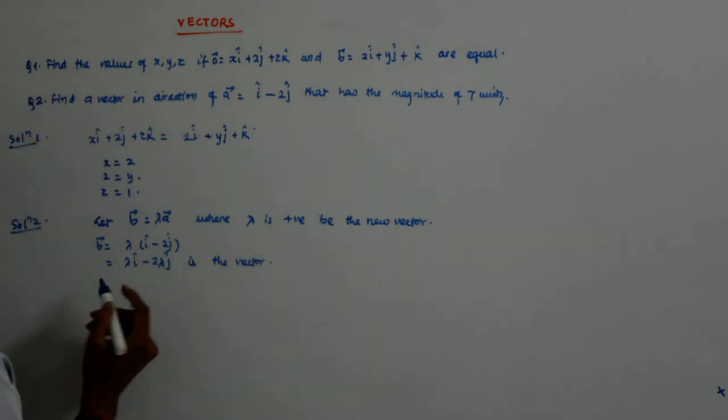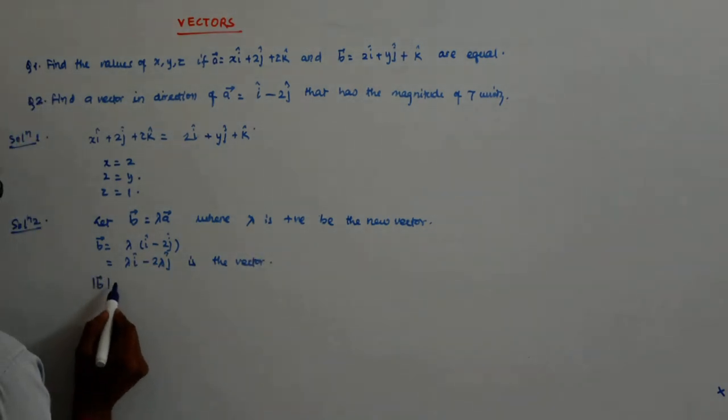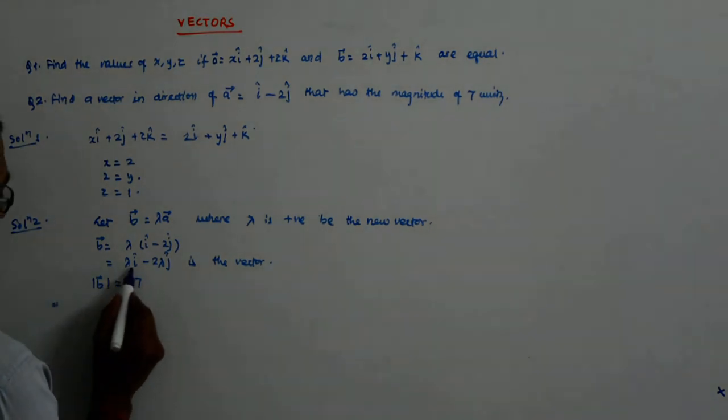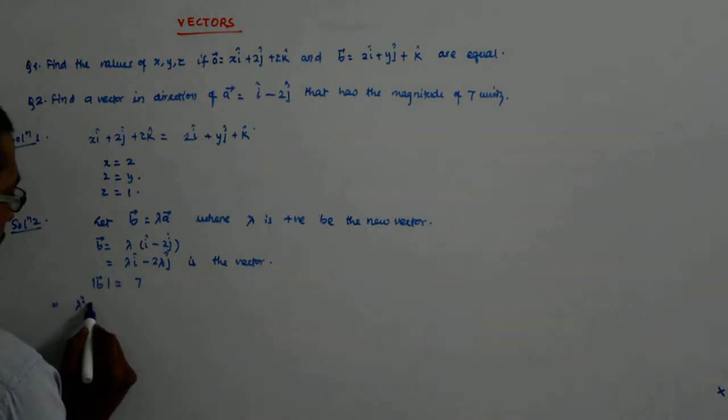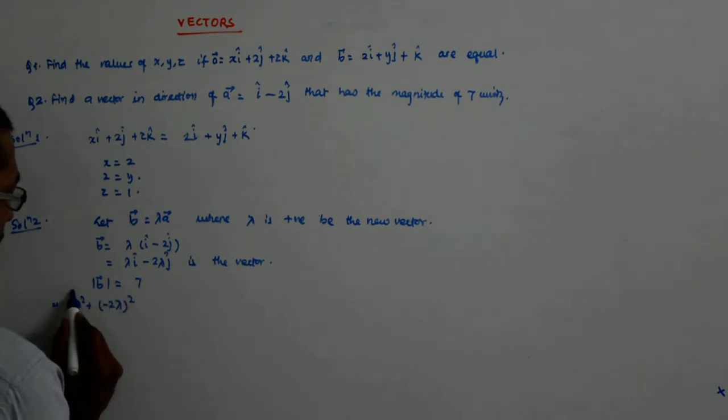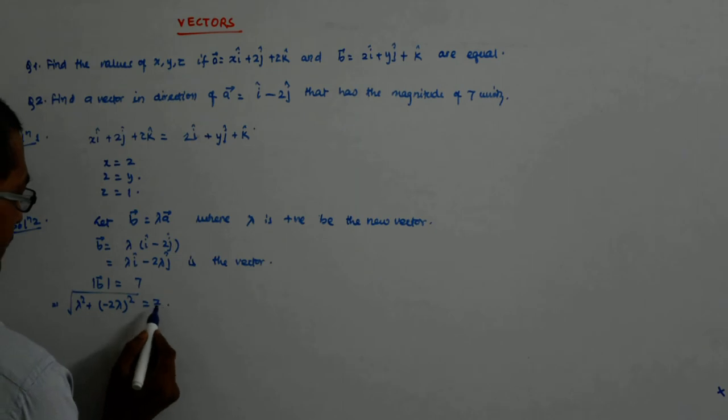Now, I want another thing. Mod B is 7. Now, what is mod B? That is lambda square plus minus 2 lambda whole square root over that is equal to 7. Now, this is what? 5 lambda square root is equal to 7.